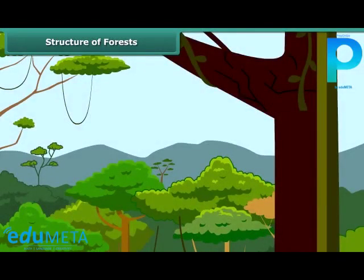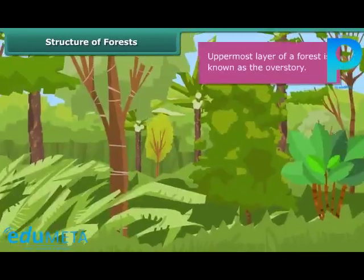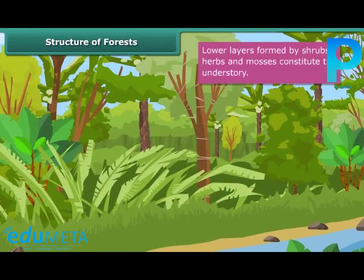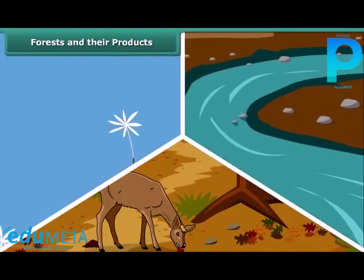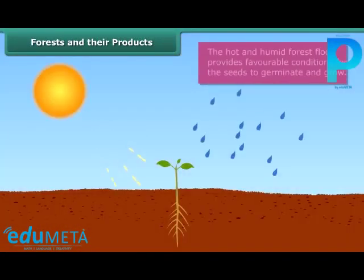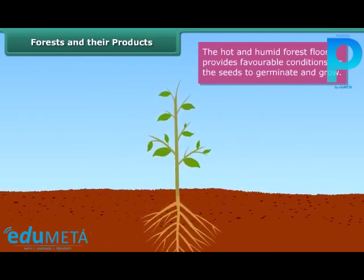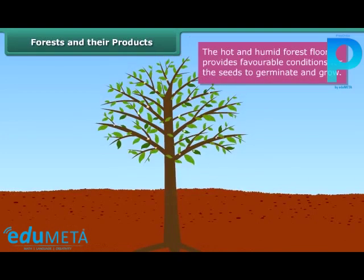A forest has a layered appearance and has trees of different heights. While the uppermost layer is known as the overstory, the lower layers formed by shrubs, herbs, and mosses constitute the understory. Seeds produced by trees are dispersed by wind, water, and animals. The hot and humid forest floor provides favorable conditions for seeds to germinate. Seedlings emerge from germinated seeds and grow into saplings first, and then trees.